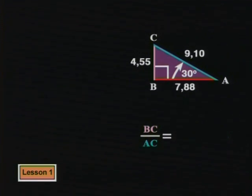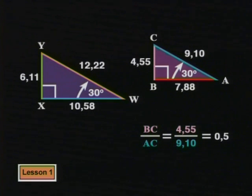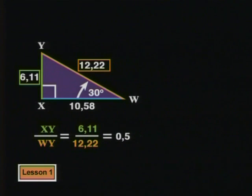The ratio of BC to AC in triangle ABC comes to 0.5, which is the same value as the ratio of XY divided by WY in triangle WXY.